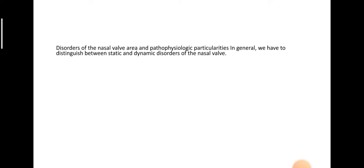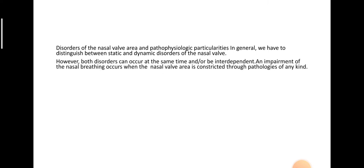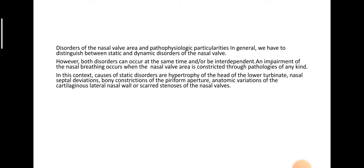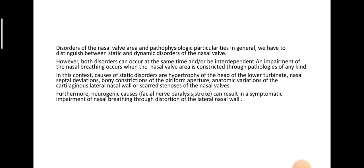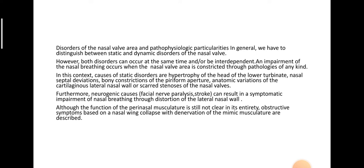Disorders of the nasal valve and pathophysiological particulars: we must distinguish between static and dynamic disorders of the nasal valve, both of which can occur simultaneously or be interdependent. An impairment of nasal breathing occurs when the nasal valve is constricted through pathologies of any kind. Causes of static disorders include hypertrophy of the head of the lower turbinate, nasal septal deviations, bony constrictions of the piriform aperture, anatomic variations of the cartilaginous lateral nasal valve, and scarred stenosis. Neurogenic causes such as facial nerve paralysis or stroke can result in symptomatic impairment of nasal breathing through distortion of the lateral nasal valve, with obstructive symptoms based on nasal wing collapse described with denervation of the mimic musculature.